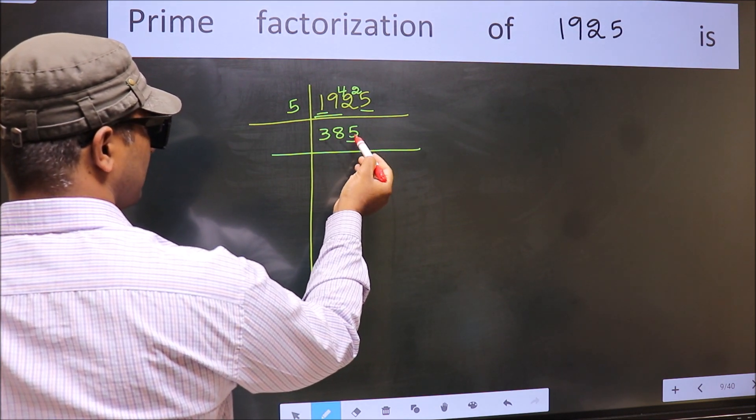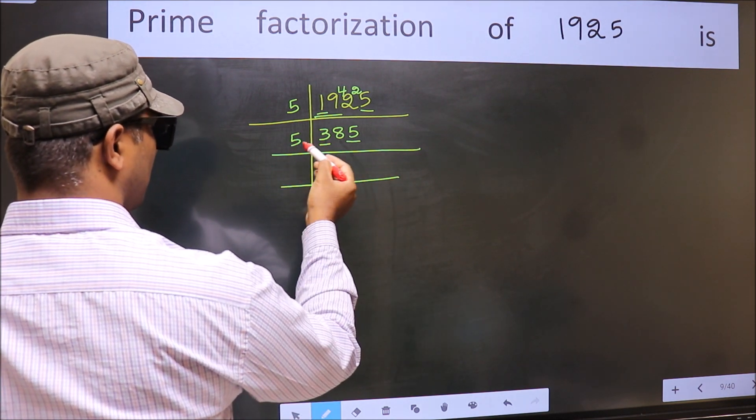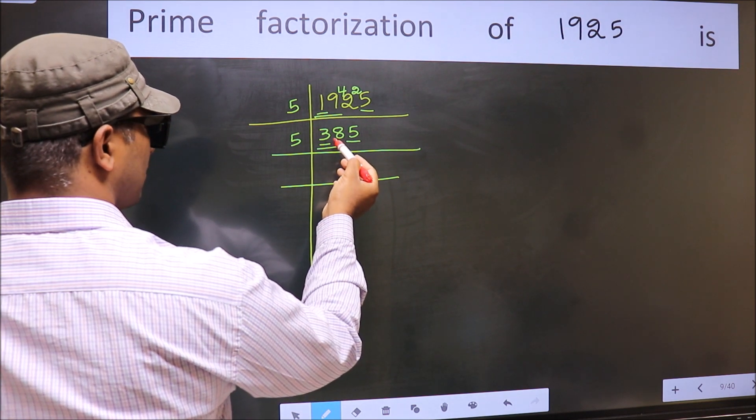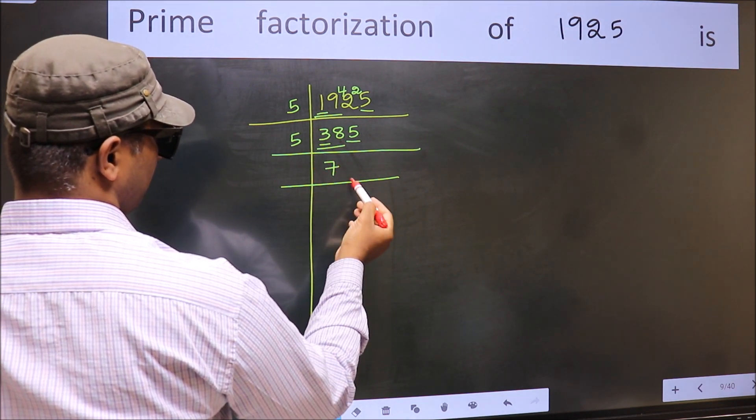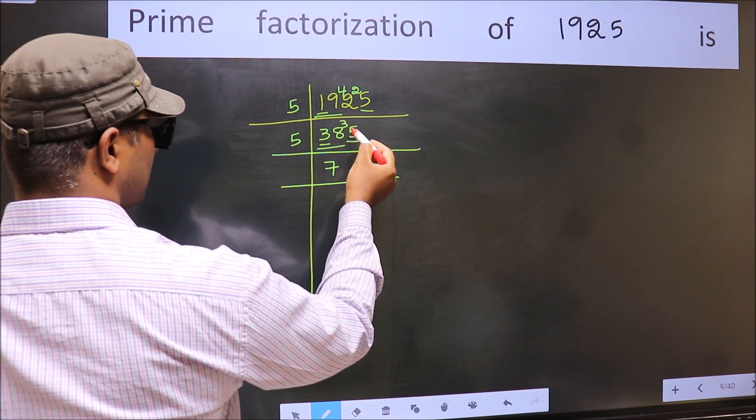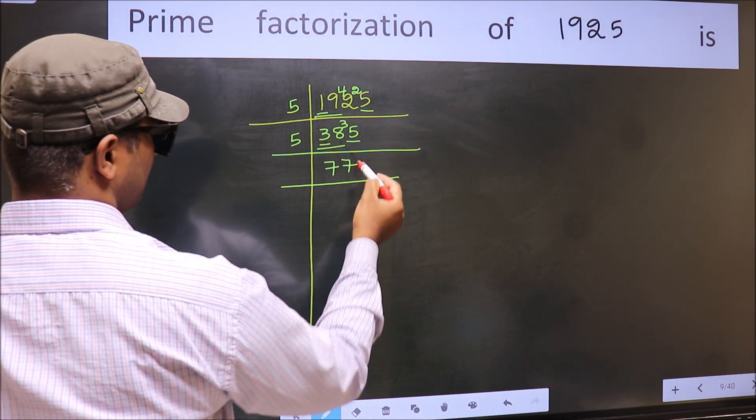Now the last digit 5, so take 5. First number 3, smaller than 5, so take 2 numbers, 38. A number close to 38 in 5 table is 5, 7 is 35. 38 minus 35, 3, 3 carried forward 35. When do we get 35 in 5 table? 5, 7 is 35.